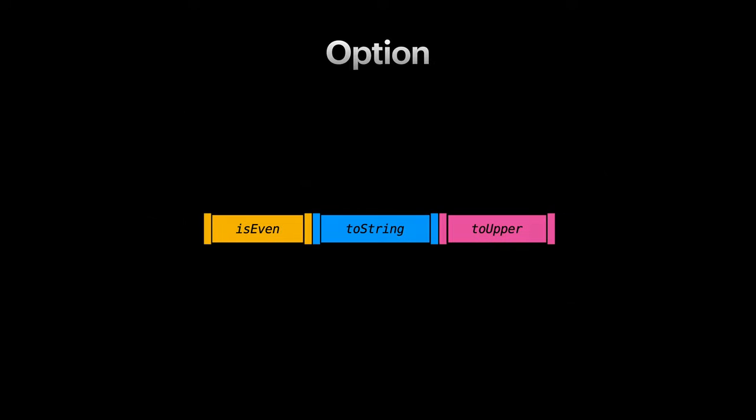To understand how useful this is, let's use our pipe analogy for functions. Imagine three functions is even, to string, and to upper connected back to back. If we pass an integer like 12 from the left to the pipes, we will get a string true in capital case from the right.